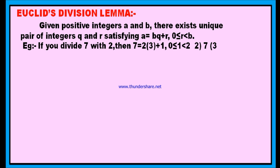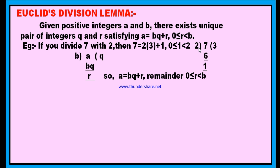For example, if we divide 7 with 2, then we can write 7 as 2 times of 3 plus 1. Look at this division: 2 goes into 7 three times, giving 6, and if we separate 6 from 7, we get remainder 1. So 7 is the dividend, 2 is the divisor, 3 is the quotient, and 1 is the remainder. You can write 7 as the product of 2 and 3 plus the remainder 1. This is the division rule.